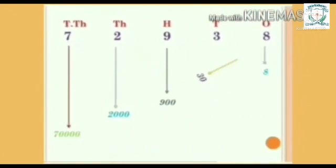The value shows 8, 30, 900, 2000, and 70,000. So we read this number as 72,938.